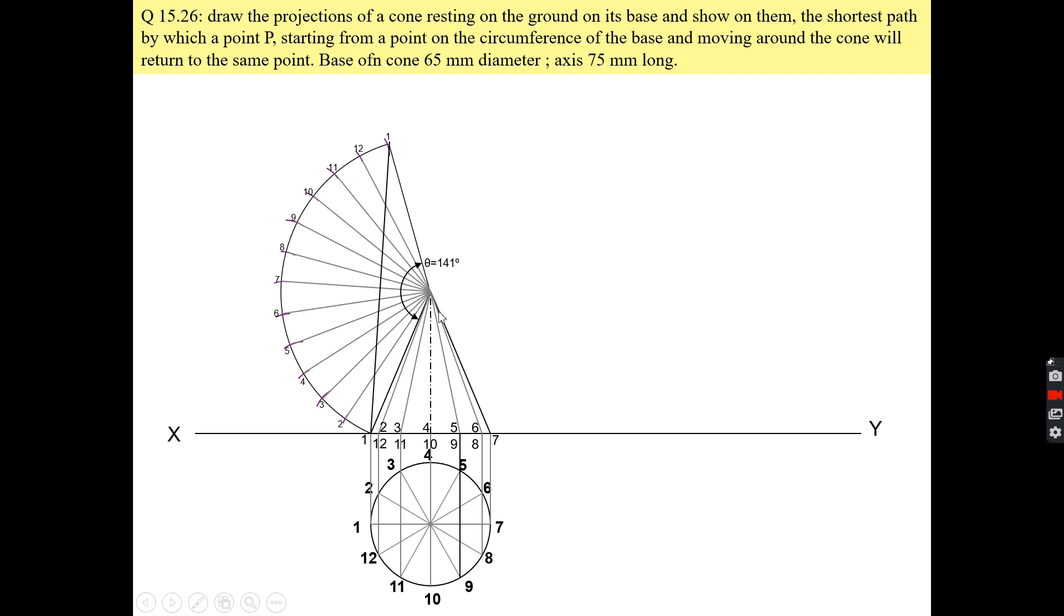At generator number 2, or you can say O2, this point cuts this generator at this point. Similarly, on the other generators you can see how the point P is passing through. So what I will do is I will transfer these points on the generators O12, O11, O10 from here to the front view of the cone.